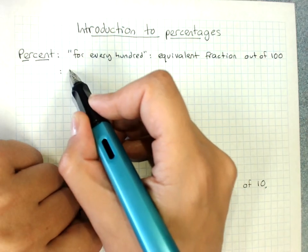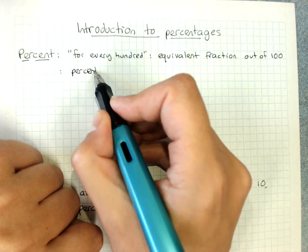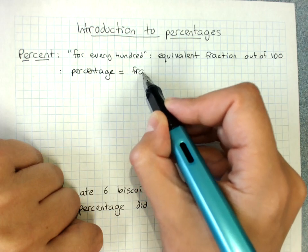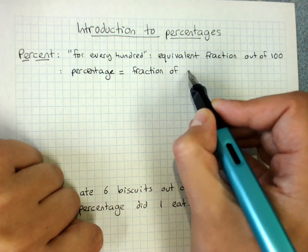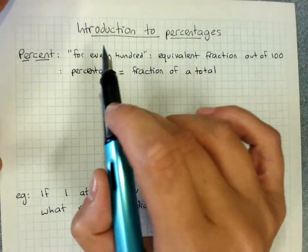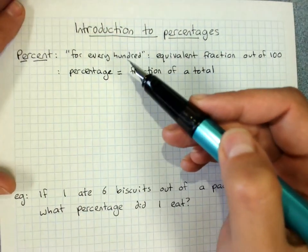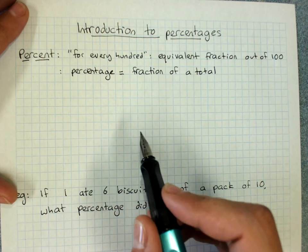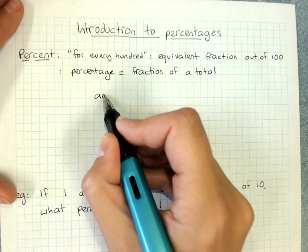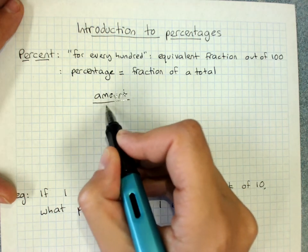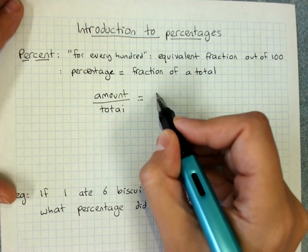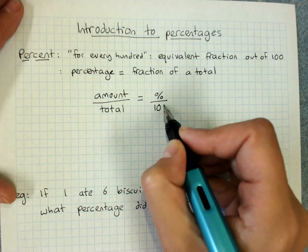A percentage is a fraction of a total. Now, all we're doing here is just an introduction to the idea of a percentage. It helps to realise that any percentage situation will be an amount out of a total, and we want to write it as an equivalent fraction of whatever the percentage is out of a hundred.